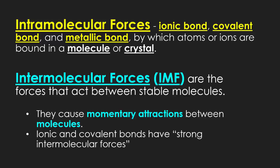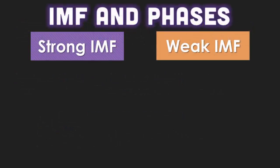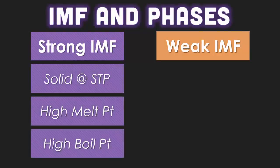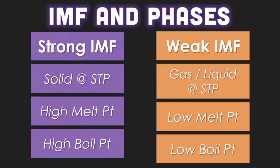Ionic and covalent bonds have strong intermolecular forces. If you have a strong intermolecular force, most likely the compound or molecule is a solid at STP and will have a high melting and boiling point. On the other hand, weak intermolecular forces cause things to be gases or liquids at STP, with low melting and low boiling points.